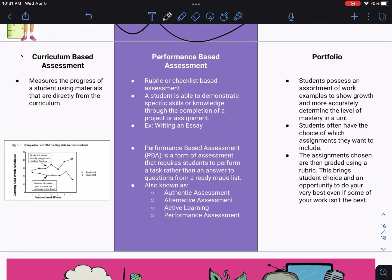For the curriculum-based assessment, this measures the progress of a student using materials that are directly from the curriculum. The performance-based assessment is essentially a rubric or checklist-based assessment. It's a student being able to demonstrate specific skills or knowledge through completion of a project or assignment. An example of this would be writing an essay. You would have a rubric for your essay, you would tell the student what to expect, and they would be graded against that rubric. Performance-based assessment, also PBA for short, is a form of assessment that requires students to perform a task rather than to answer questions that are already made from a list. It can also be known as other terms on the exam like authentic assessment or alternative assessment.